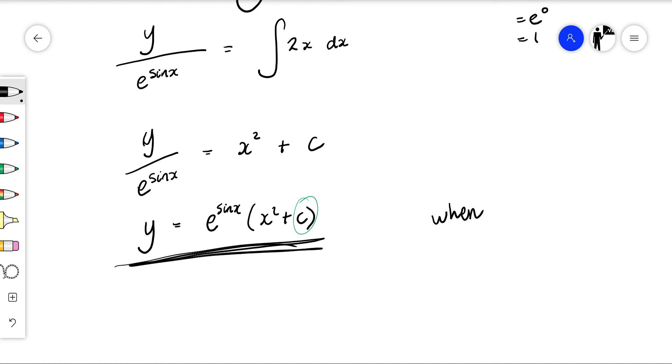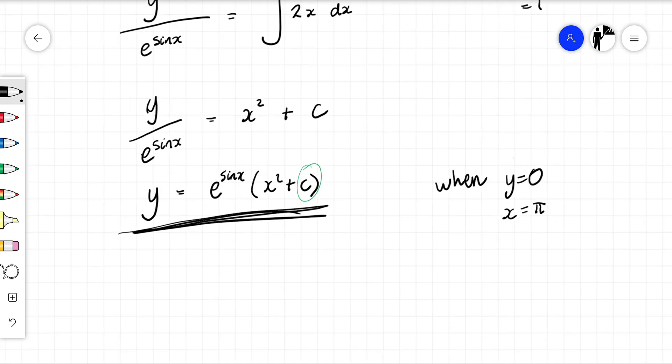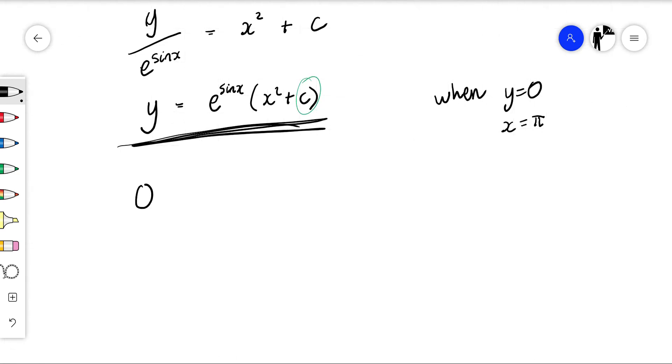We now want to substitute in our initial conditions to find out what this specific value is. We were told that y equals 0 when x was equal to π. So we're going to substitute this in: 0 equals e to the power sine of π, then that becomes π squared plus c.